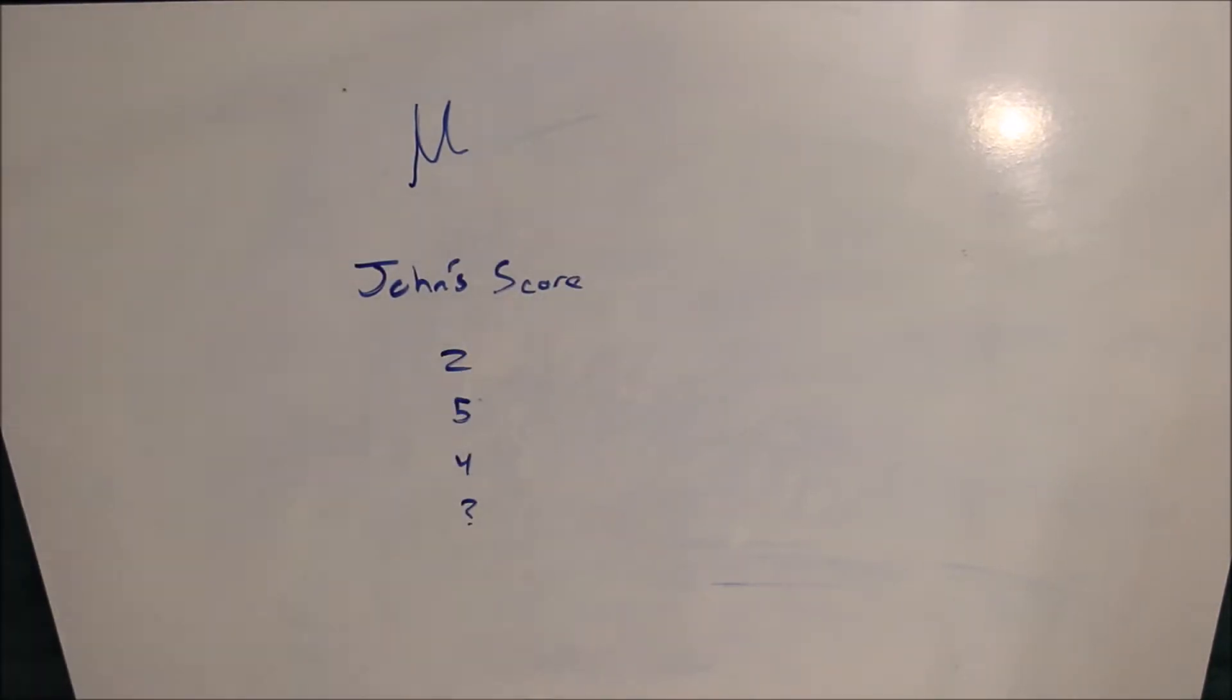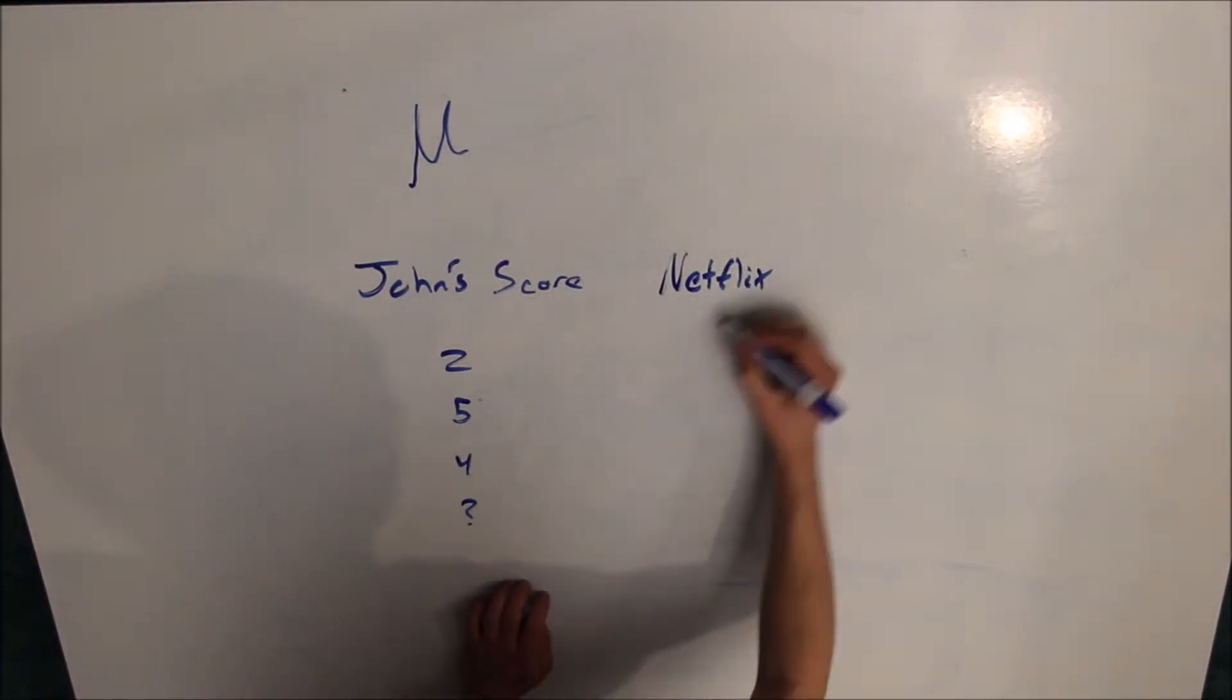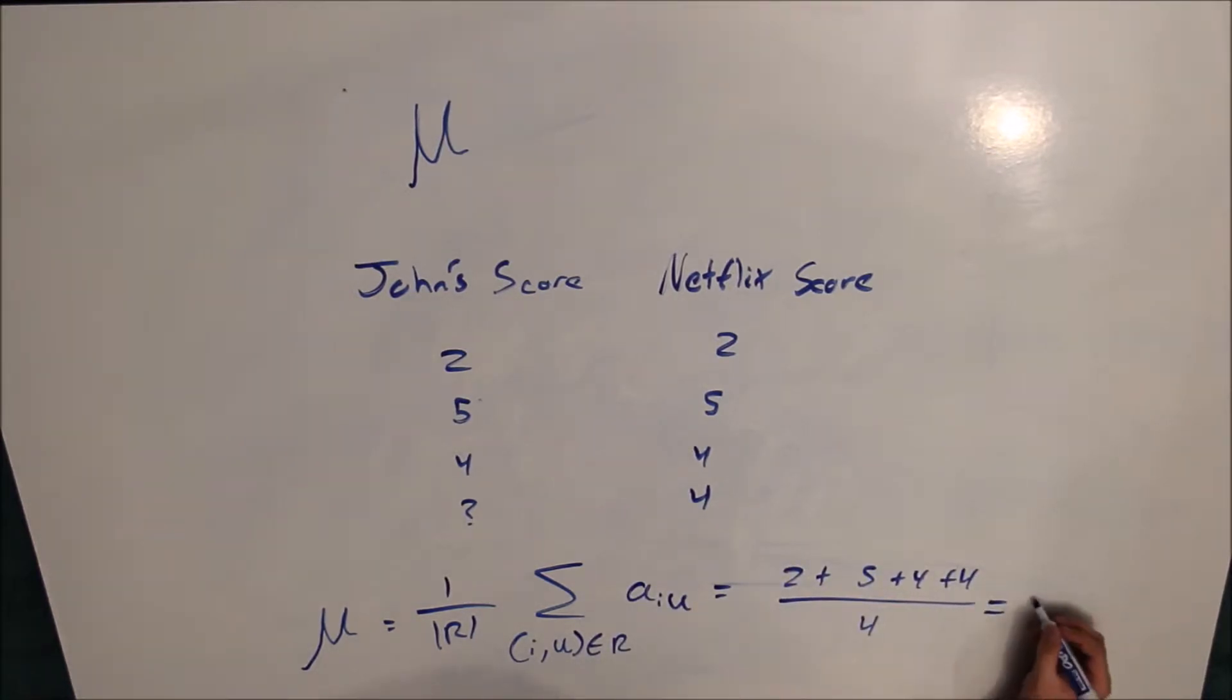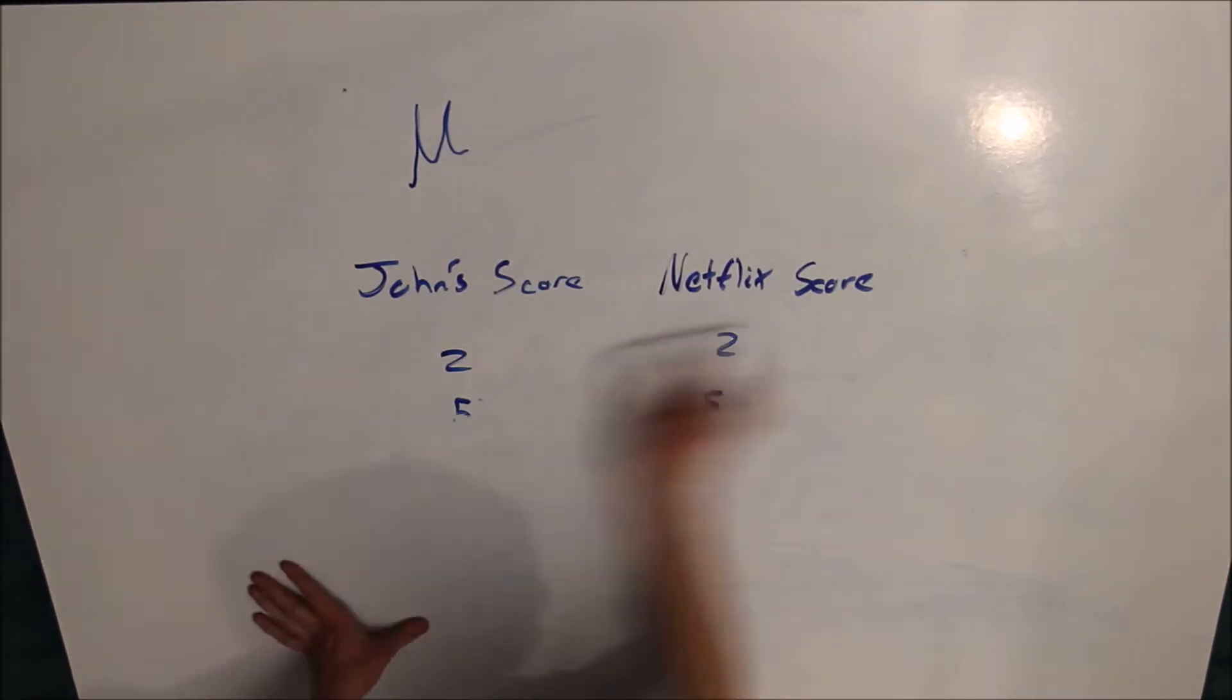Before we get the average mu for all of Netflix's scores, what we need to do is we need to first sum all of the values and then multiply them by the number of movies and TV shows which are being rated, which in this case is 4. Once we get this, you get the mu value of 3.5 for the entire set.